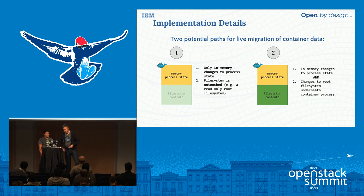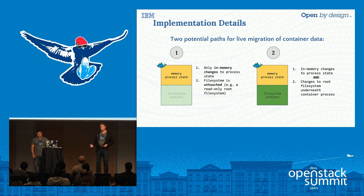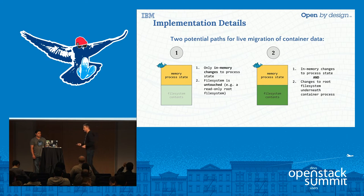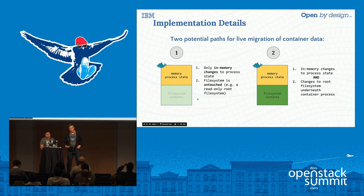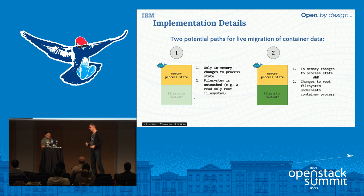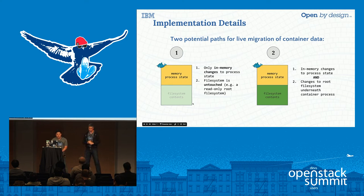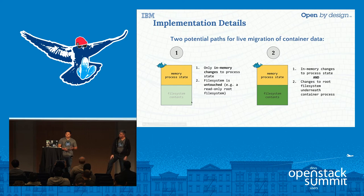So that gives you a good background on where CRIU came from, what its capabilities are, and how it came to be in Docker. Now I'm going to turn it over to Sean, and he's going to talk through the challenges of using the CRIU support in Docker to actually support migration to another host.